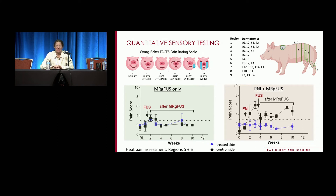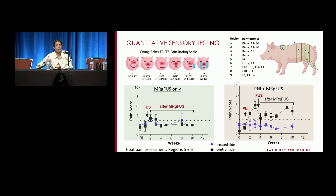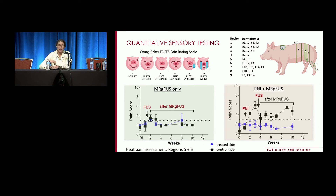Pain research in large animals is very difficult. As an engineer, building the device is straightforward, but measuring pain decrease in pigs over time is a real challenge. Pigs go through similar tests as humans: heat and pain threshold, pin prick, and mechanical stimuli, assessing responses across different dermatomes. In their procedure, after creating the nerve injury and applying focused ultrasound, they observed a pain decrease lasting approximately three to four weeks before pain levels increased again.